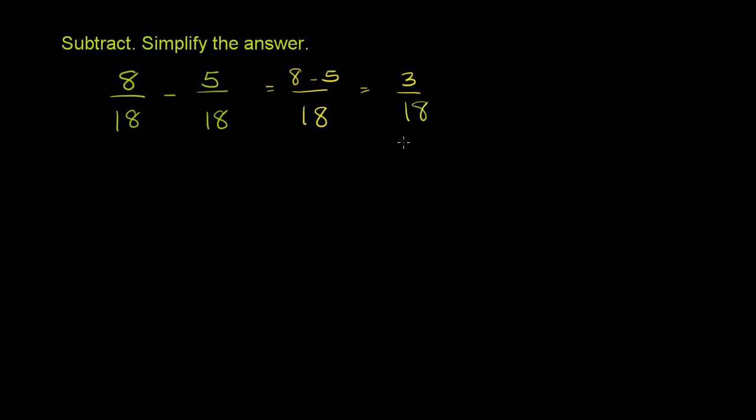This will be equal to 3 over 18, which is the answer. But it's not completely simplified, because both 3 and 18 are divisible by 3. So let's divide them both by 3. You divide 3 by 3, you divide 18 by 3. You get 3 divided by 3 is 1, 18 divided by 3 is 6. So you get 1/6.